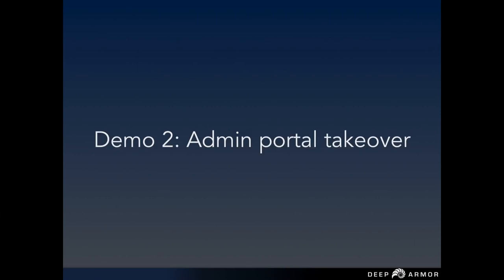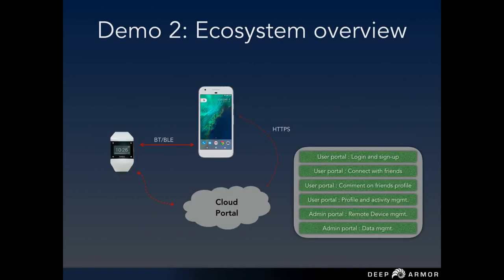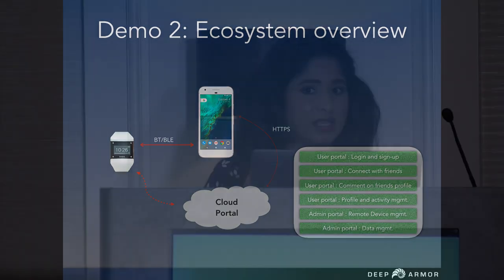The second demo is really interesting — it demonstrates the butterfly effect I was referring to earlier. The ecosystem is similar: we have a wearable device that communicates with a companion application, and you also have the cloud portal where the wearable or companion application can interact with the cloud to store data. On the cloud, we have two critical features: first, the user portal where users can sign up, upload data, connect with friends, and monitor activity. The second feature — only available to the admin — supports remote device management and remote data management, so if a user loses their device or wants to remotely lock it, the administrator can do a remote lockdown or remote data wipe.